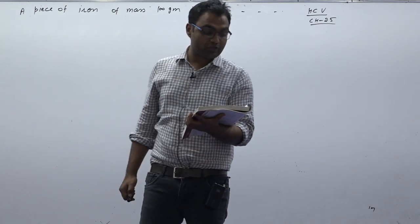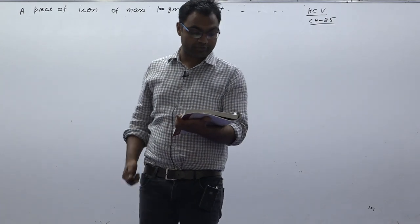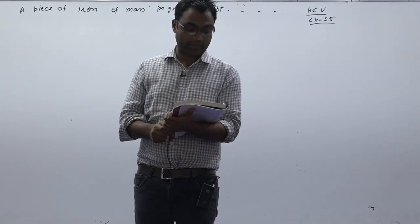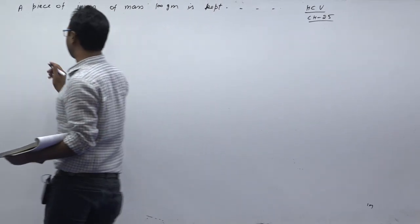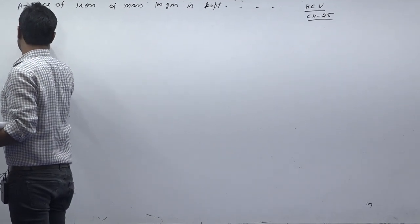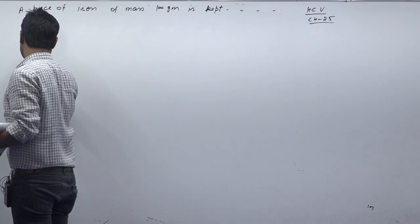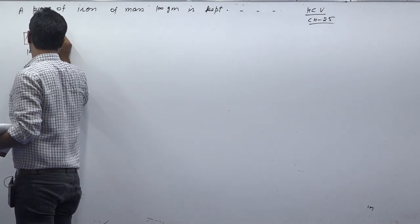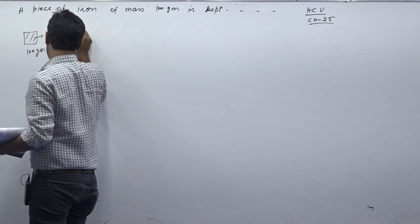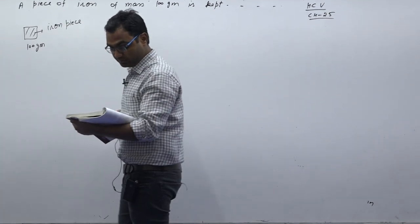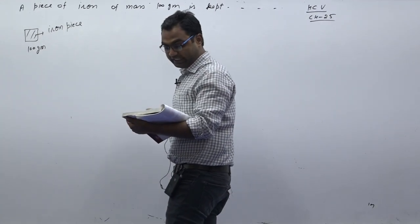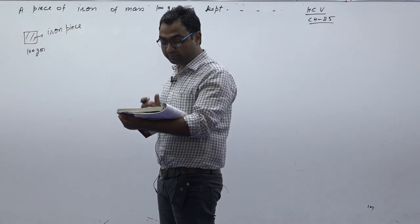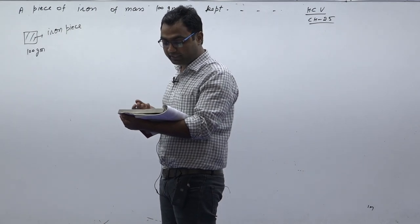The question is: a piece of iron of mass 100 grams is kept inside a furnace for a long time. This iron piece has a mass of 100 grams and is then put into a calorimeter with a water equivalent of 10 grams.